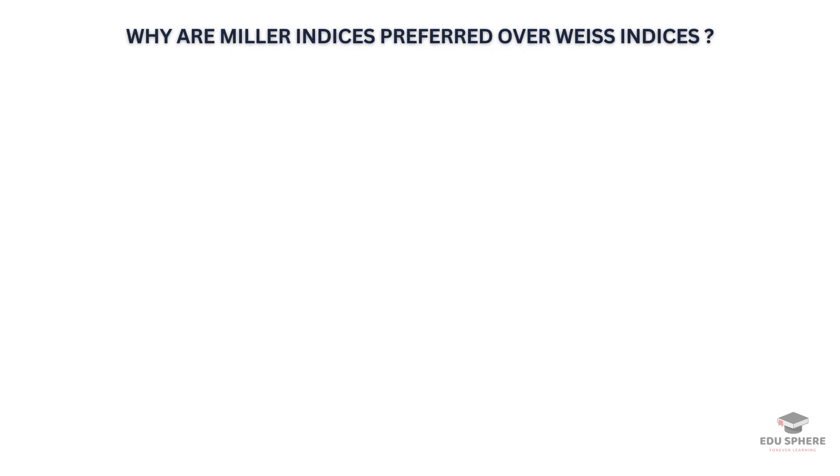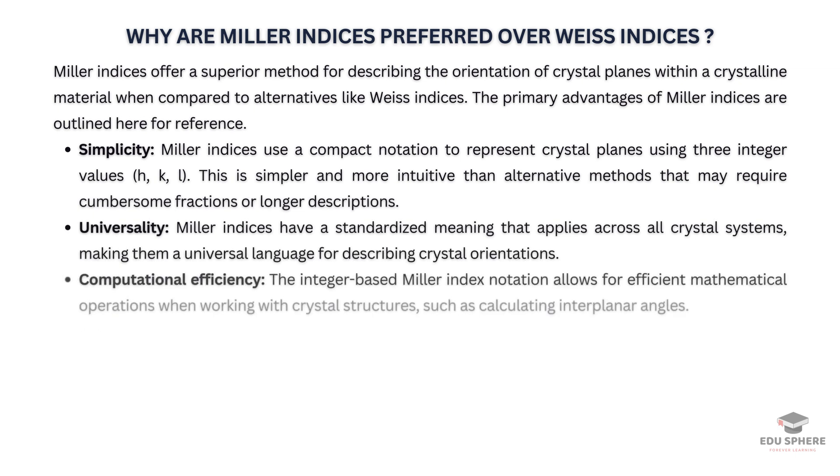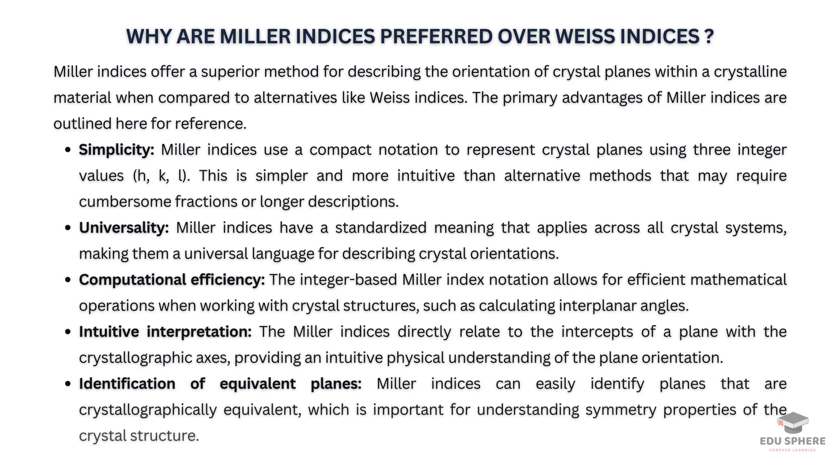I mentioned before that Miller indices are commonly used instead of Weiss indices. Let's explore why that's the case. Miller indices offer a superior method for describing the orientation of crystal planes within a crystalline material when compared to alternatives like Weiss parameters. In conclusion, Miller indices are a great way to describe crystal structures. They're easy to use and understand.